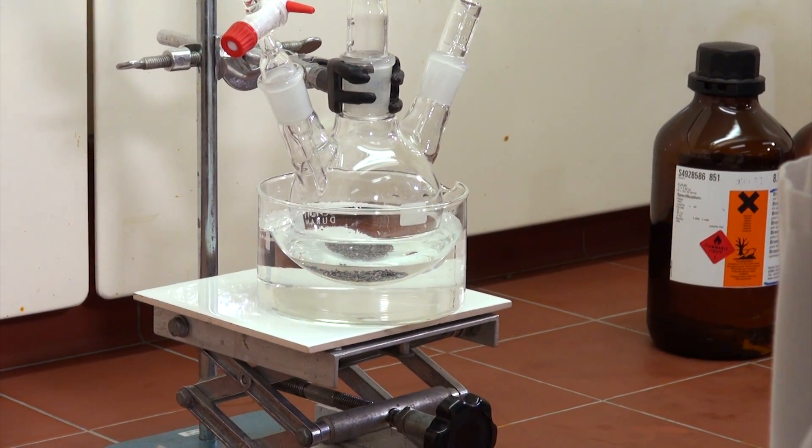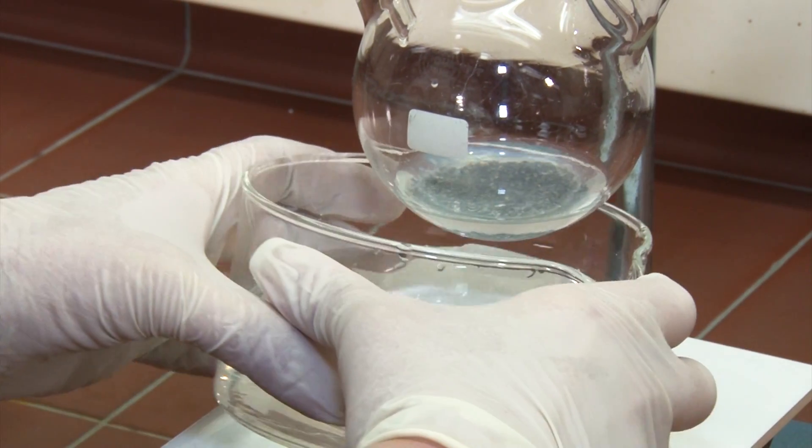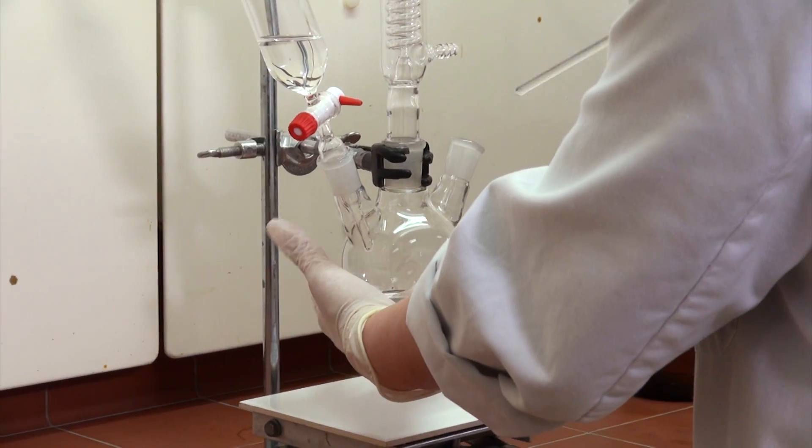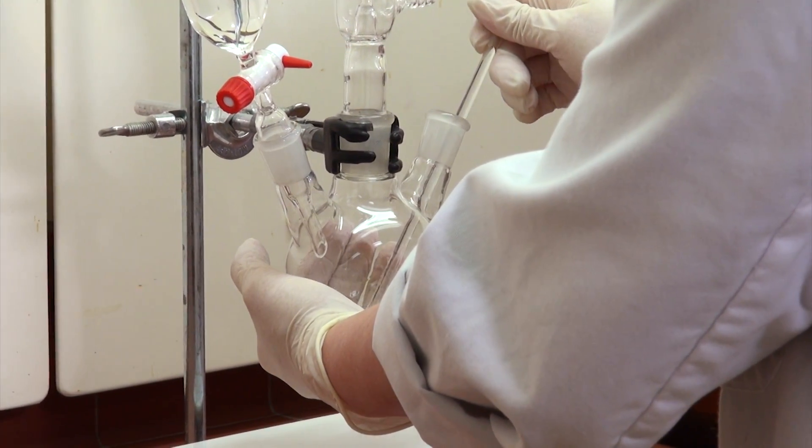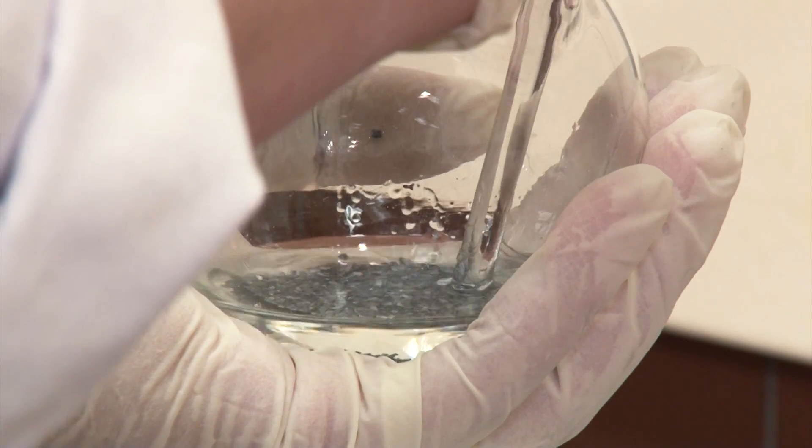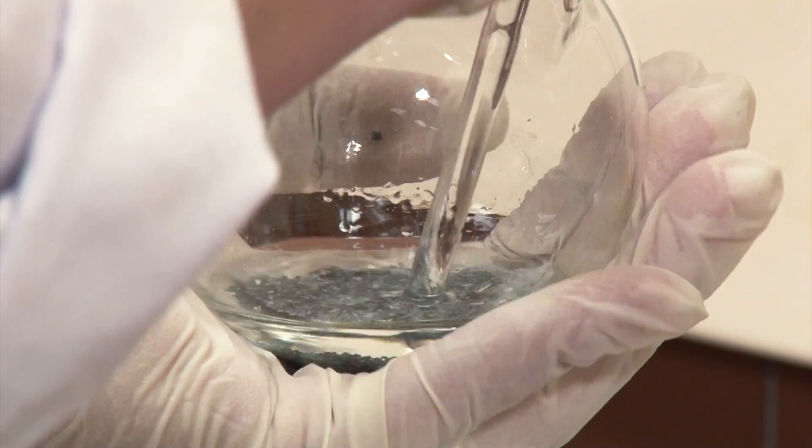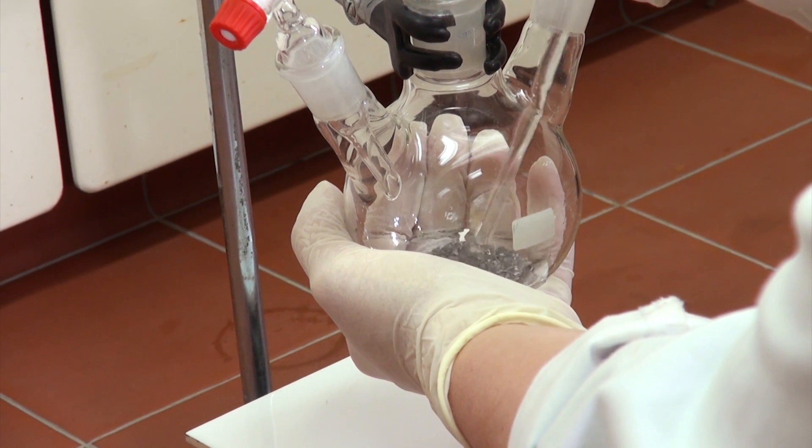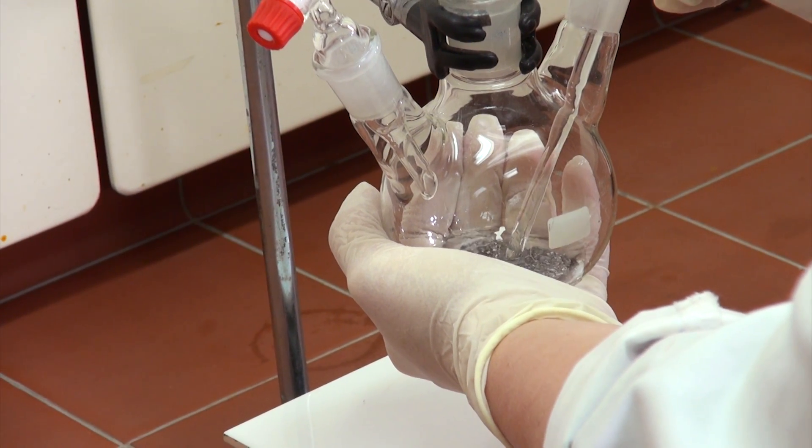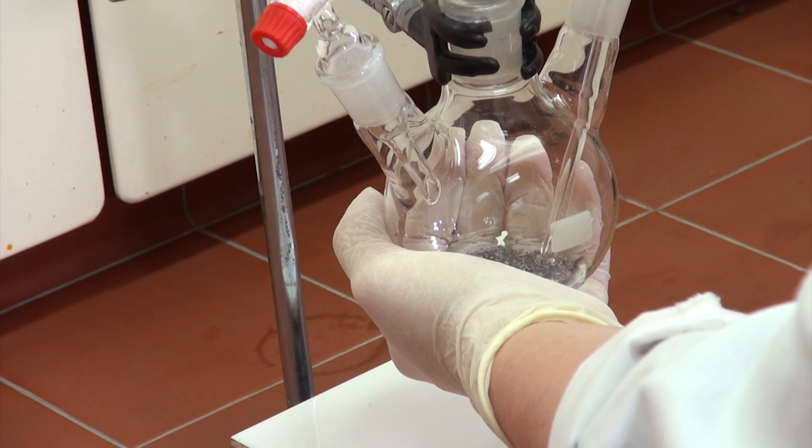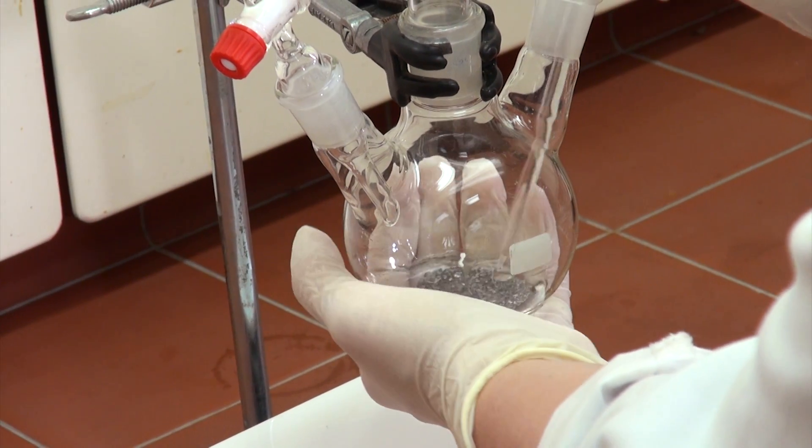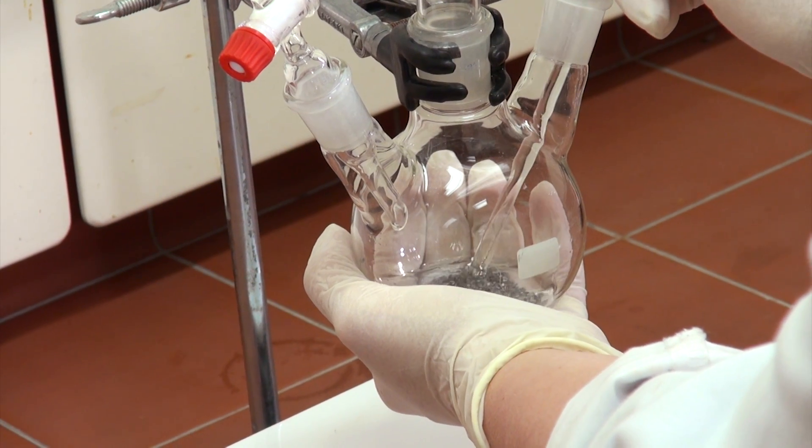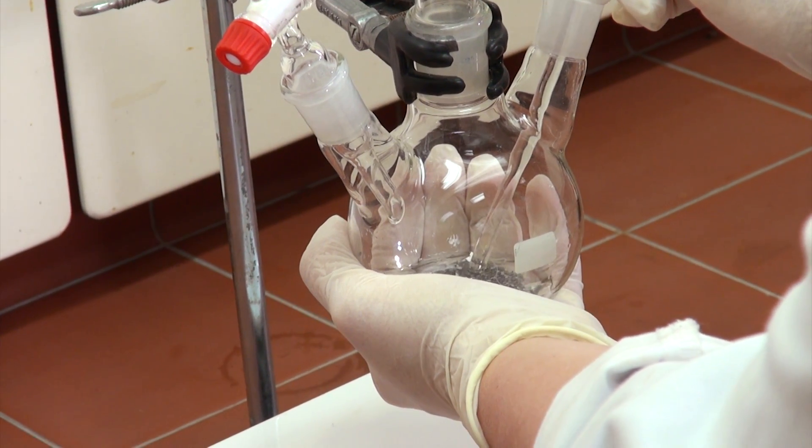If the reaction doesn't start after a few minutes, get a glass rod and just very carefully crush a few of the magnesium turnings with the glass rod. Sometimes they get a layer of oxidation products on the surface of them and they're not really very reactive. Be really careful when you're doing this that you don't poke a hole in the bottom of the flask, and make sure you always have your hand underneath it to protect it.